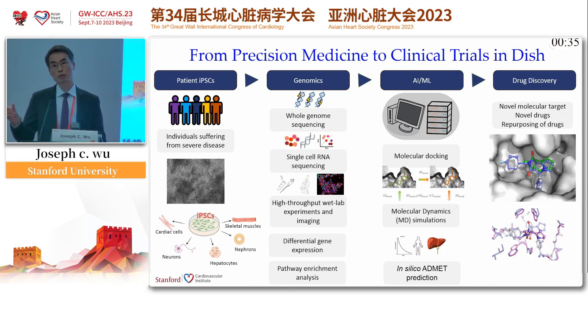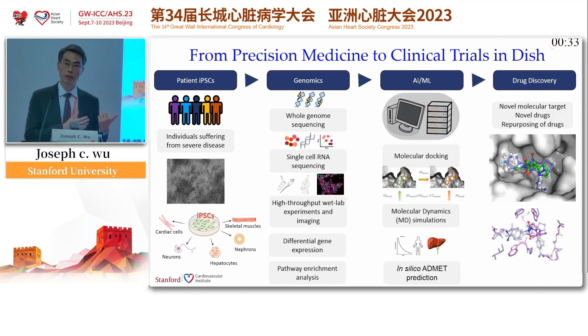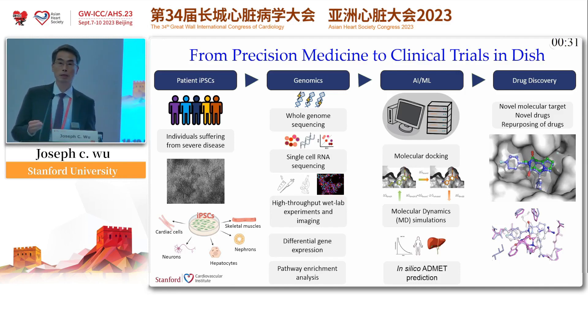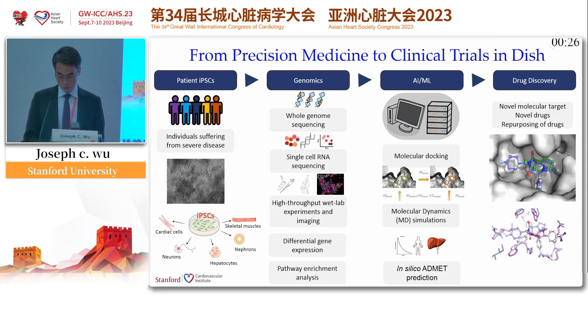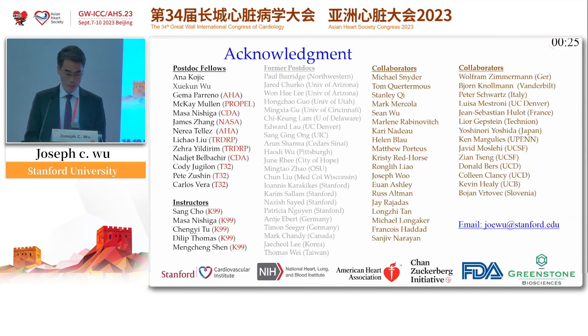You feed them into the AI machine learning software to churn out new drugs, and then you test your drugs — not on a mouse, not on immortalized cell lines, but on iPS cells that have the exact disease you're working on.